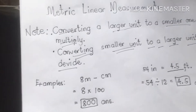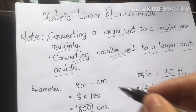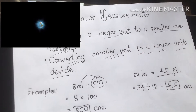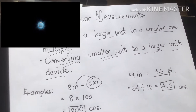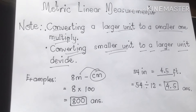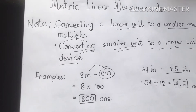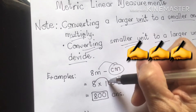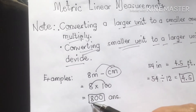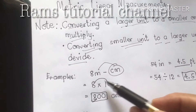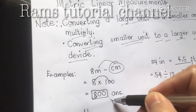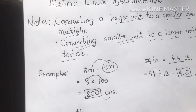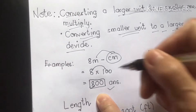For example, number one: 8 meters to centimeters. Meter to centimeter — remember class, we're converting to a smaller unit, so we're going to multiply it. Meter to centimeter, we multiply by 100. 8 times 100: 8 times 1 is 8, 8 times 0 is 0, 8 times 0 is 0. The answer is 800 centimeters.